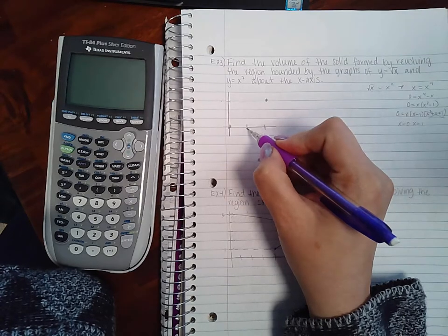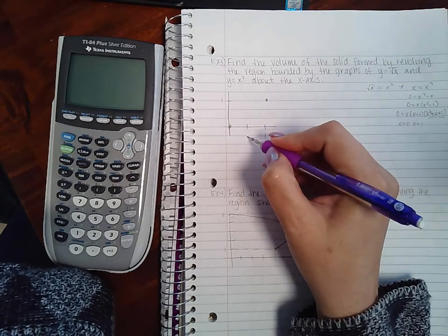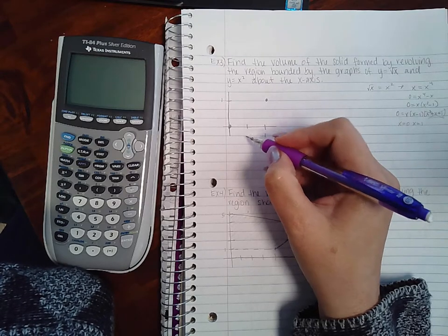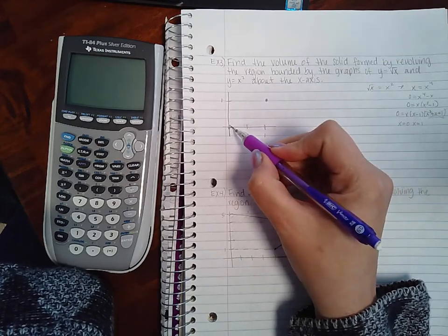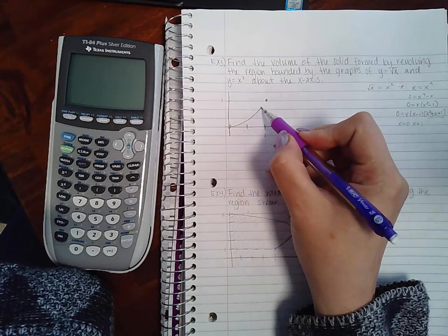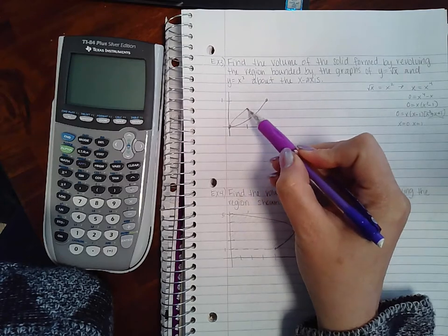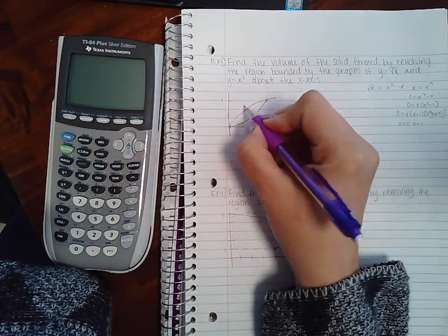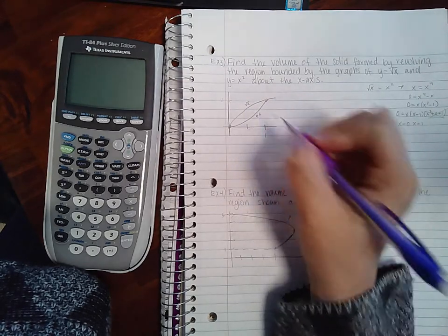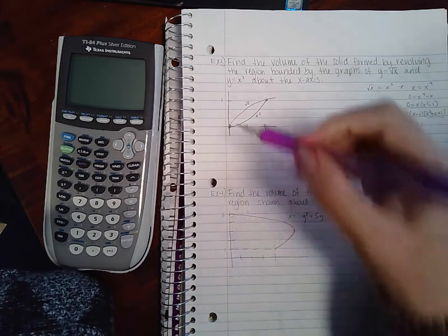But to figure out which one is the top and which one is the bottom, you could pick another point. You don't necessarily need to because we know that an x squared function is going to go down this way and a square root function actually moves in this manner. Okay, so the top is actually the square root of x and the bottom is x squared, just based off of the basic graphs and what they look like.